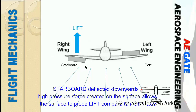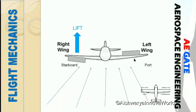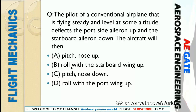In case of the left wing or port, drag is produced, so the lift will be acting downwards. The starboard will be deflecting upward, and the rolling will take place in a clockwise direction. Therefore, the rolling is with the starboard wing up — the right option is option B.